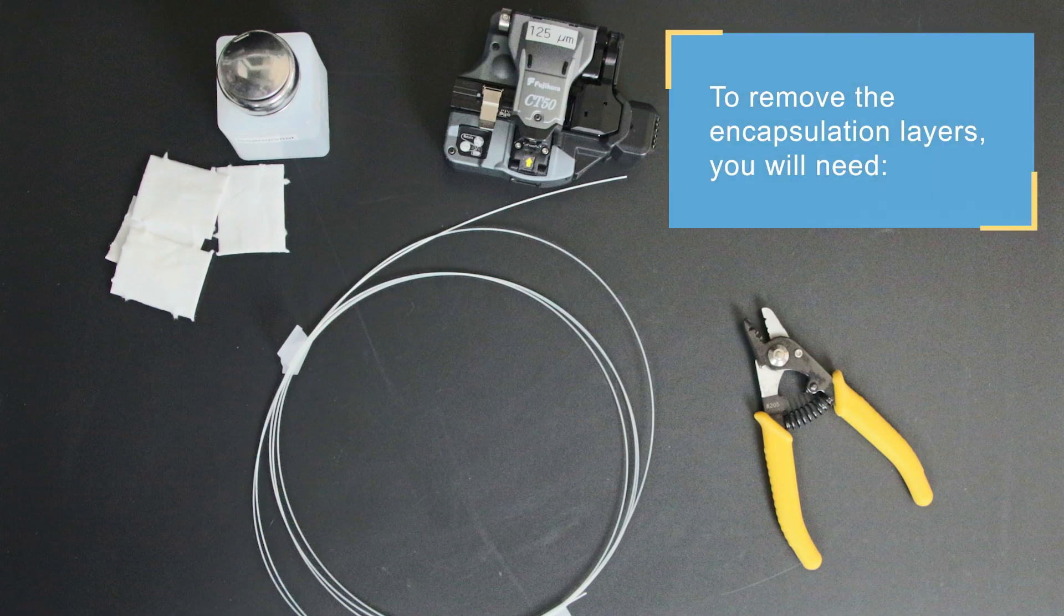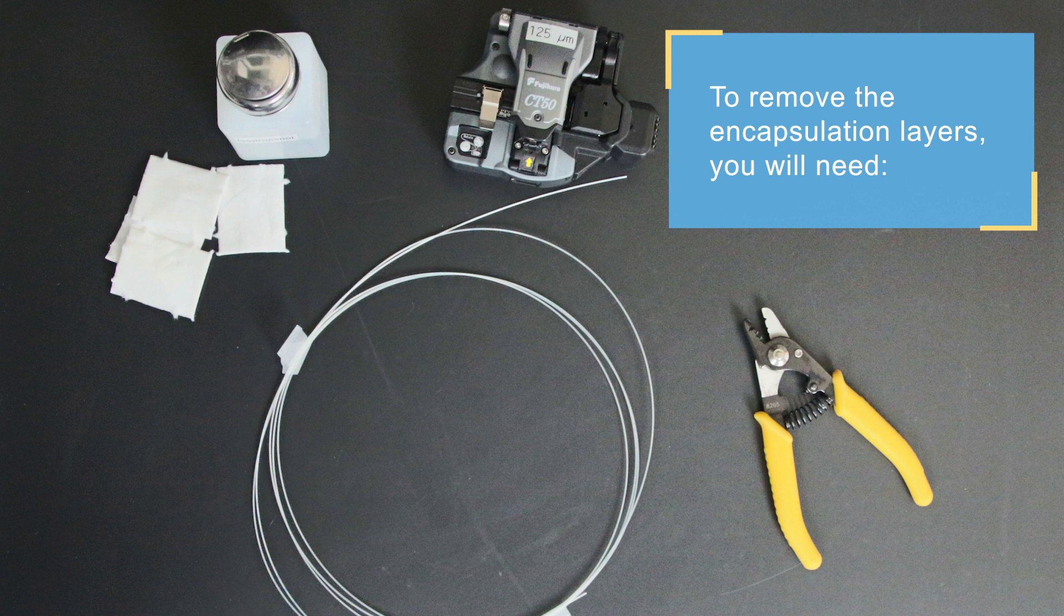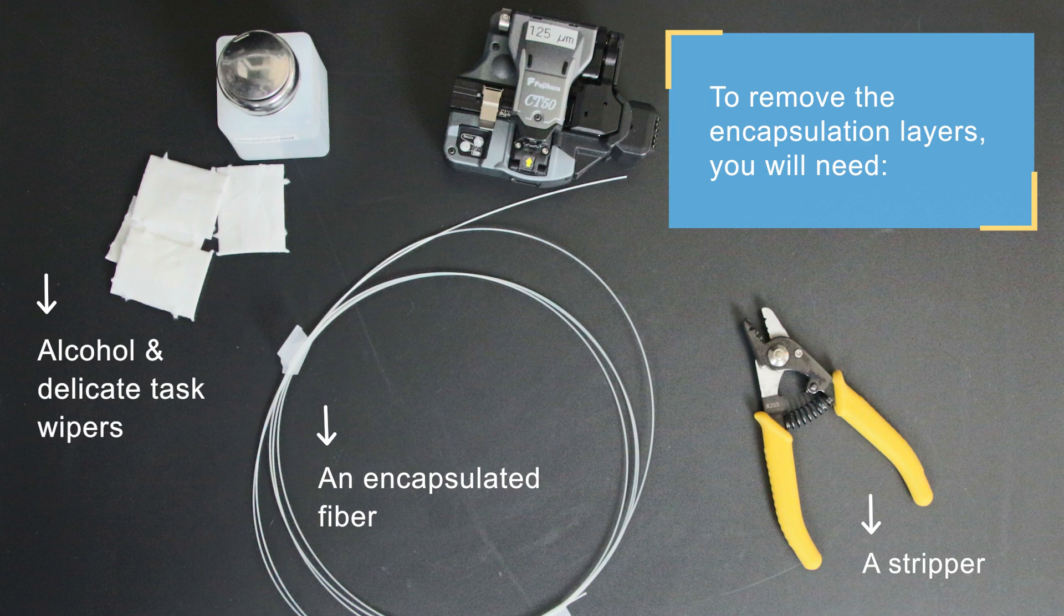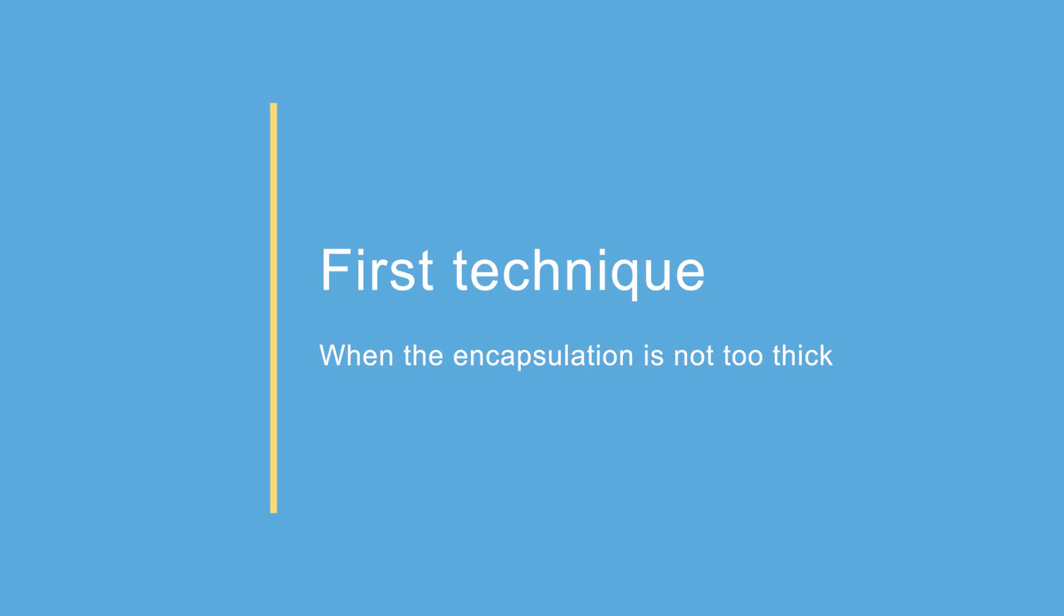To remove the GFRP and the optional HDPE layers, you will need an encapsulated fiber, a standard stripper for telecom fibers, alcohol and delicate task wipers, and optionally, a sharp cutter.